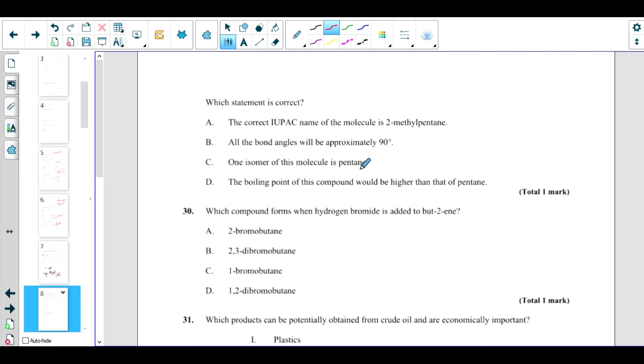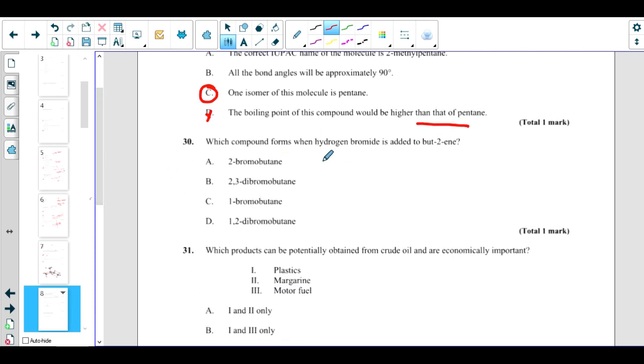All bond angles will be approximately 90? No, all the bond angles are not same. One isomer is pentane? Yes, this is true because isomer is talking about isomer, so we don't care for the structure. The molecular formula is C5H12, so this is correct. The boiling point of the compound would be higher than that of pentane? No, this is also wrong because it has a branch. When branches are there, boiling point is less, so answer should be lower here. Pentane has no branch.